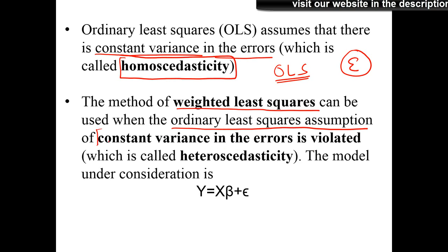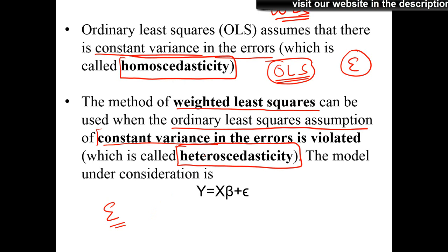You can use WLS in place of OLS when the constant variance assumption is violated. You cannot use OLS if your error is not homoscedastic — in that scenario, you can use WLS. The scenario when the error term is not homoscedastic, where it does not have a constant variance, we call that heteroscedasticity. Whenever we have heteroscedasticity, we need to use WLS.